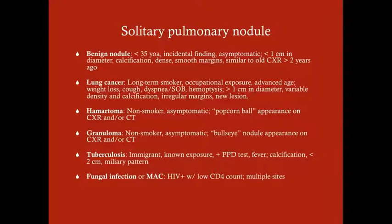When you see a solitary pulmonary nodule, there are many possibilities. We'll primarily discuss benign nodules and lung cancer, but others include a hamartoma — more likely in a non-smoker, asymptomatic, with a popcorn-ball appearance on CT — and a granuloma, also in non-smokers and asymptomatic, but with a bull's-eye nodule appearance on CT.